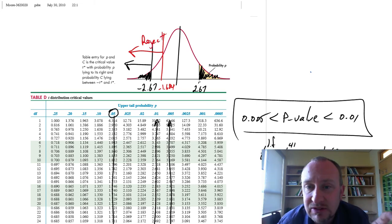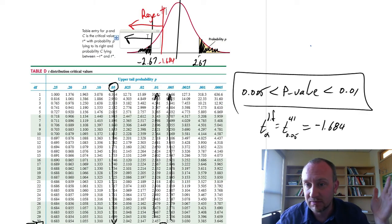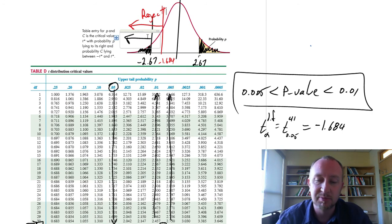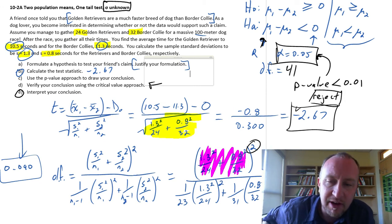And so again, we've got consistent results. Both the critical value approach and the p-value approach, both of them quite strongly support the alternative hypotheses.